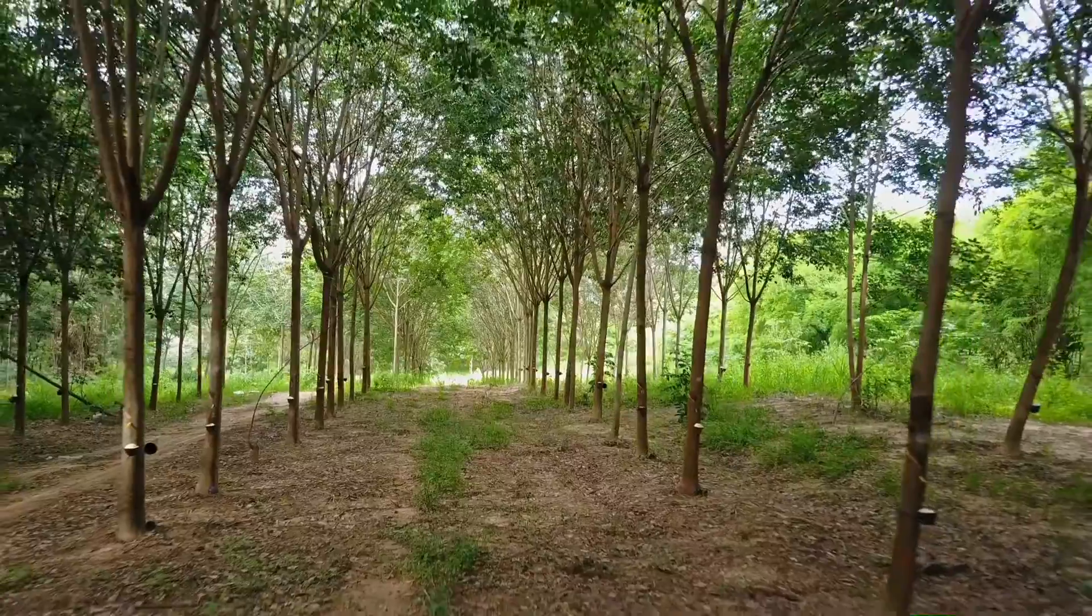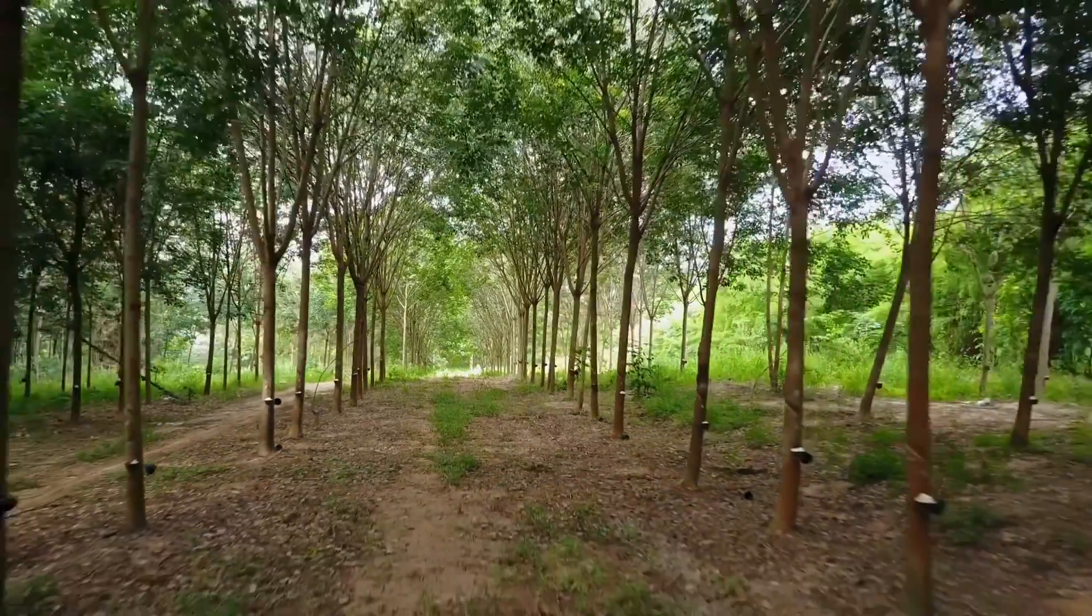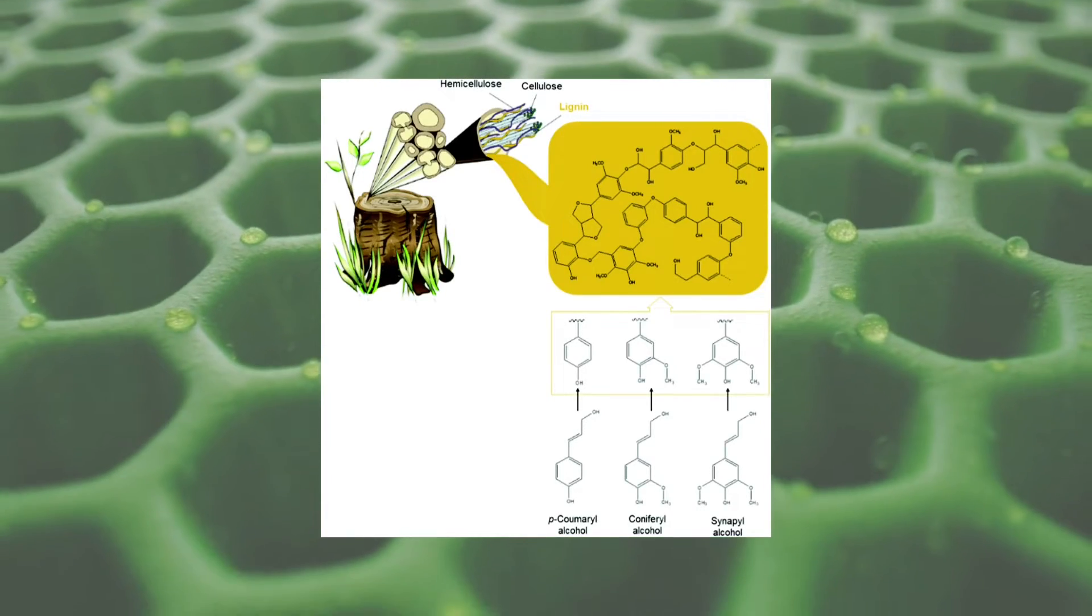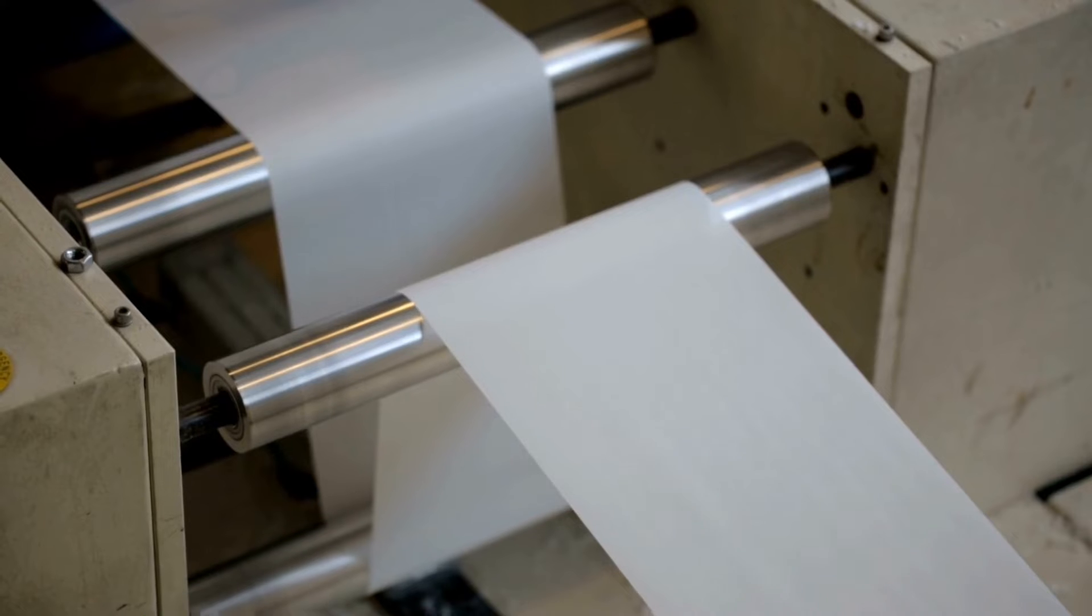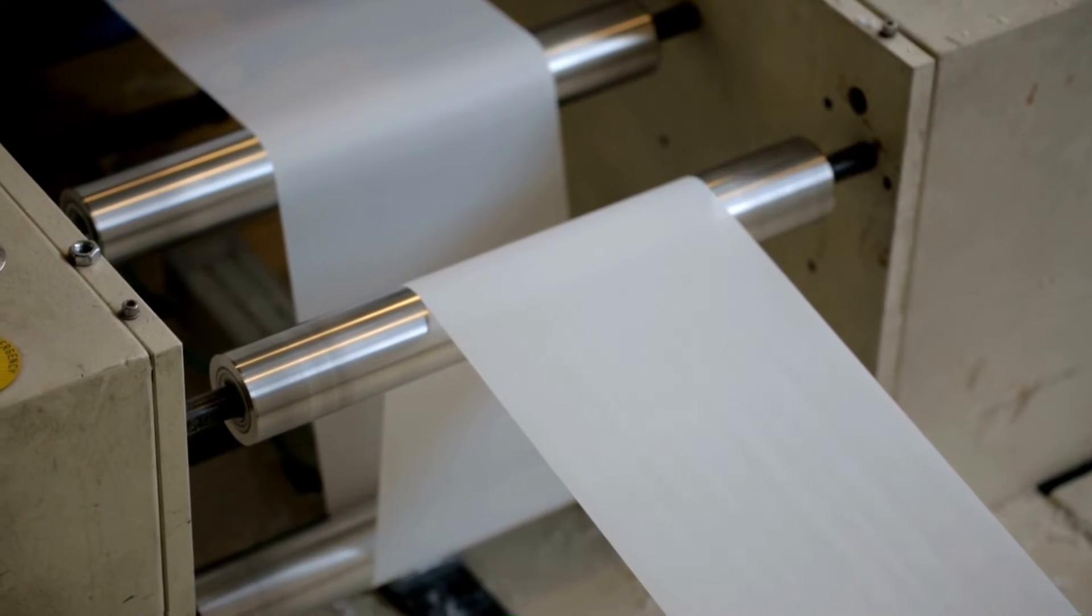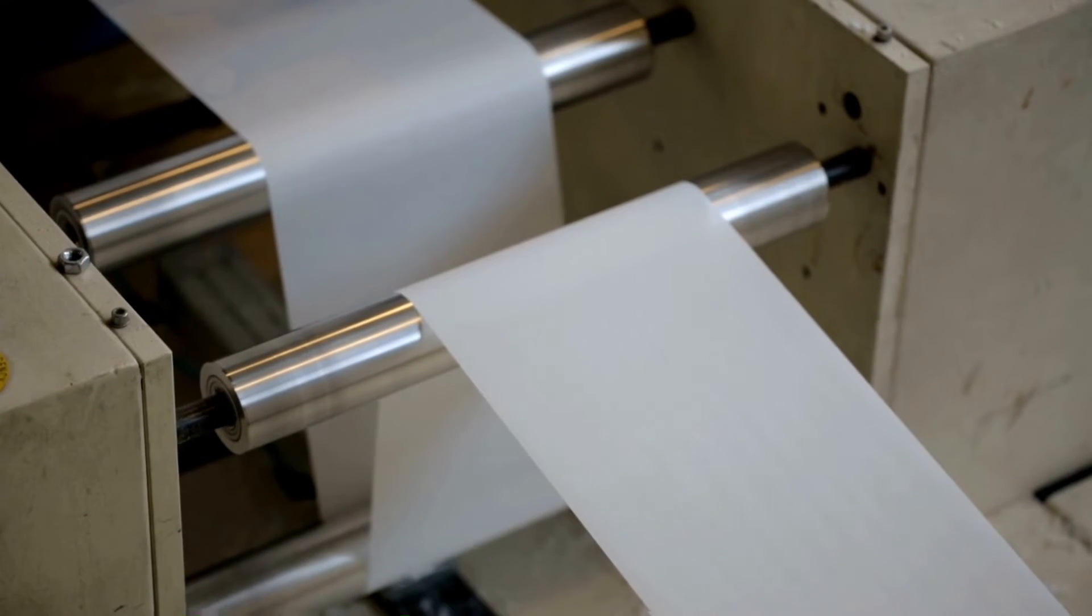But what is lignin? Lignin is a plant-based molecule. It is produced from plant cell walls, and it's a molecule mostly responsible for making plants stiff. Lignin is the second-largest biomass in nature, and it is frequently derived from the paper industry.